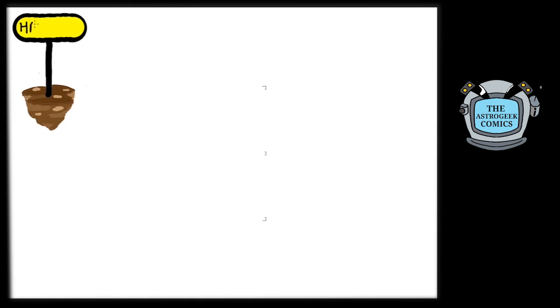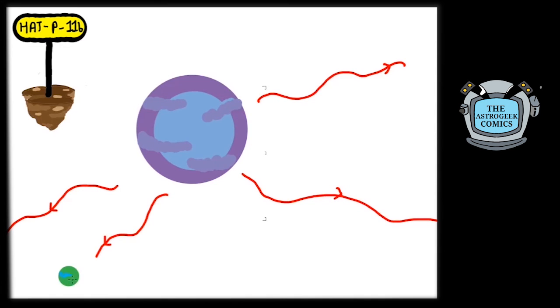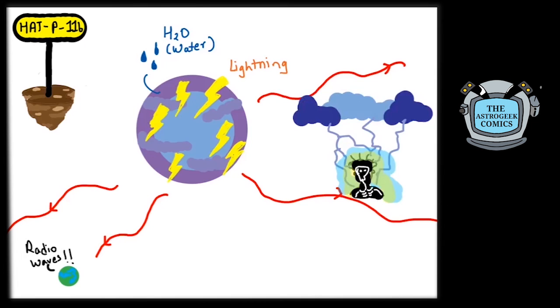Wow! An exoplanet named HAT-P-11b, discovered in 2009, was emitting weak radio signals. It was also found to have water vapor. Scientists found that the radio signals can be explained with lightning storms on the planet at a scale of astonishing 3,800,000 Saturnian lightning flashes per km per hour.